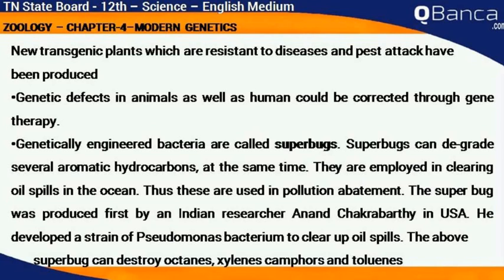Genetically engineered bacteria are called superbugs. Superbugs can degrade several aromatic hydrocarbons at the same time. They are employed in clearing oil spills in the ocean, and are thus used in pollution abatement. The superbug was first produced by an Indian researcher Anand Chakravarti in the USA, who developed a strain of Pseudomonas bacterium to clear up oil spills.